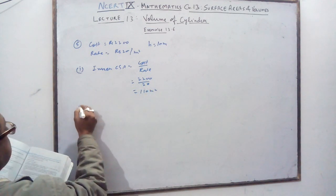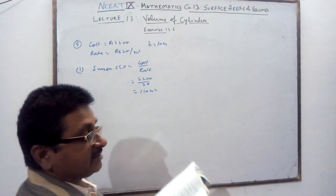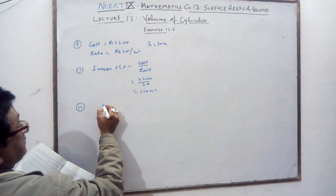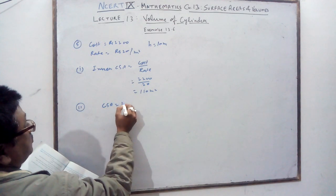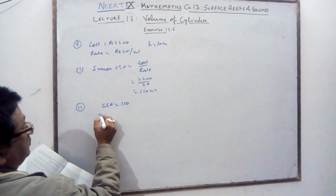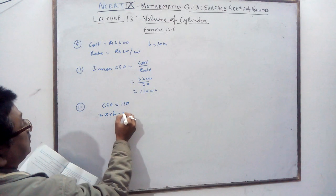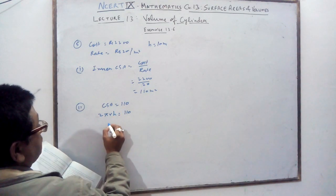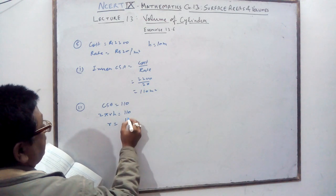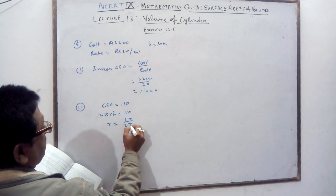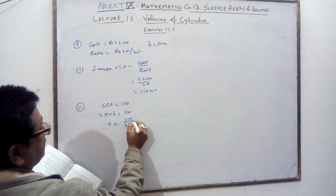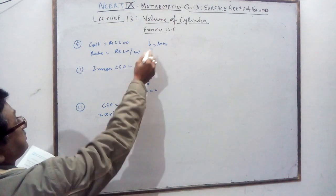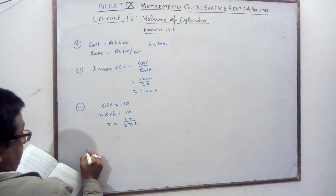The second part asks for the radius of the base. CSA is equal to 110, so 2πrh = 110. Therefore r = 110 divided by 2πh. Put in the values to get the radius. h is given, so you can find r from here.